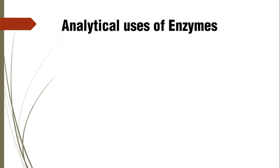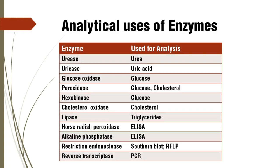Coming to the analytical uses of enzymes, we have three tables containing many MCQs and questions for brief answer and Viva. Going one by one: for urea estimation we use urease, and in normal urine we also use urease for detection of urea. Urease can be used for quantitative estimation as well.